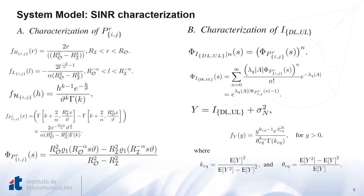These are some mathematical derivations for the characterization of the SNR. On the left side, we derive the moment generating function of one individual node. On the right side, we generalize the concept to obtain the moment generating function of the inter-cell interference plus noise power. Finally, the moment generating function has been used to compute the moments and then matched with the moments of the gamma distribution to represent the characteristics of the interference.